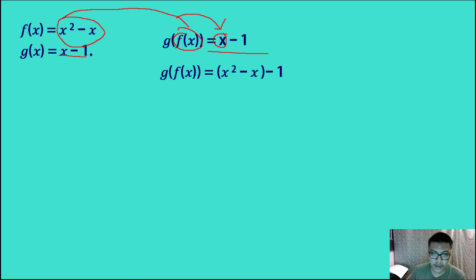So g of f of x is equal to, palitan natin yung value ni x, yung value ni f of x, which is x squared minus x. So simplifying, we have x squared minus x minus 1. So ganun lang kadali, no? Walang mahirap dito sa composition of functions.